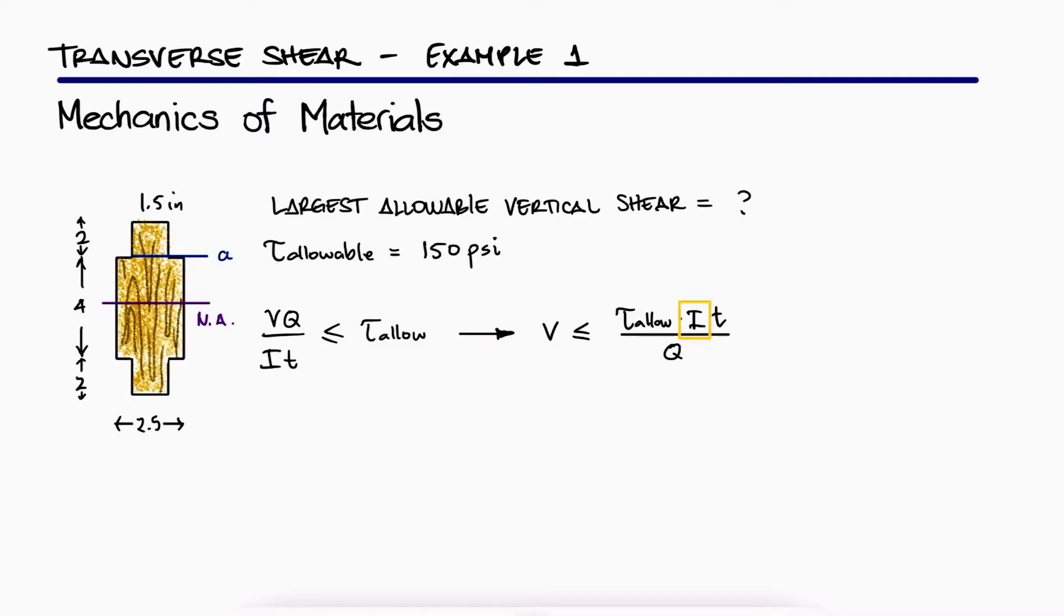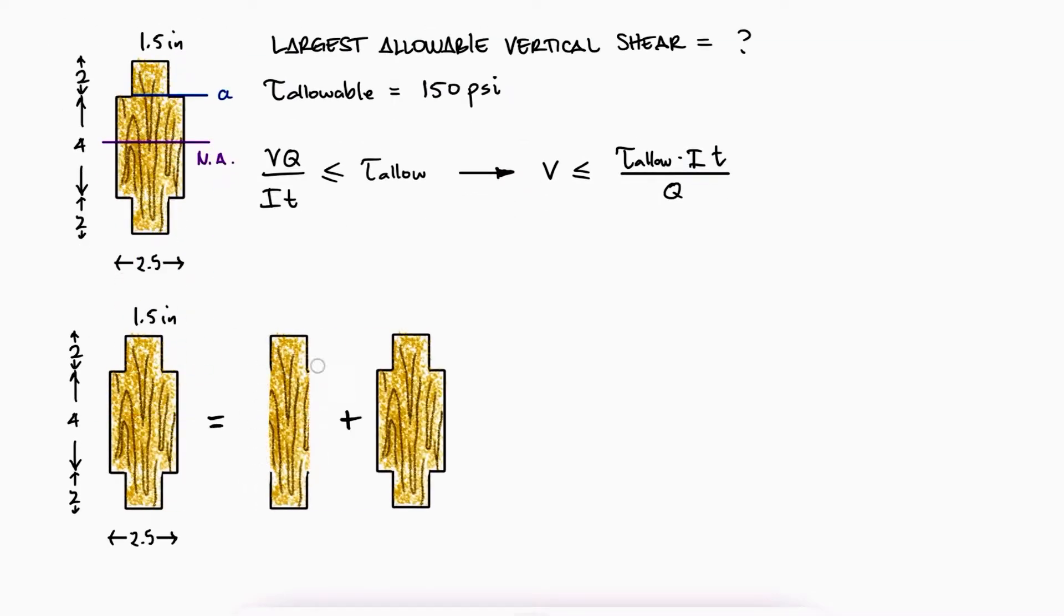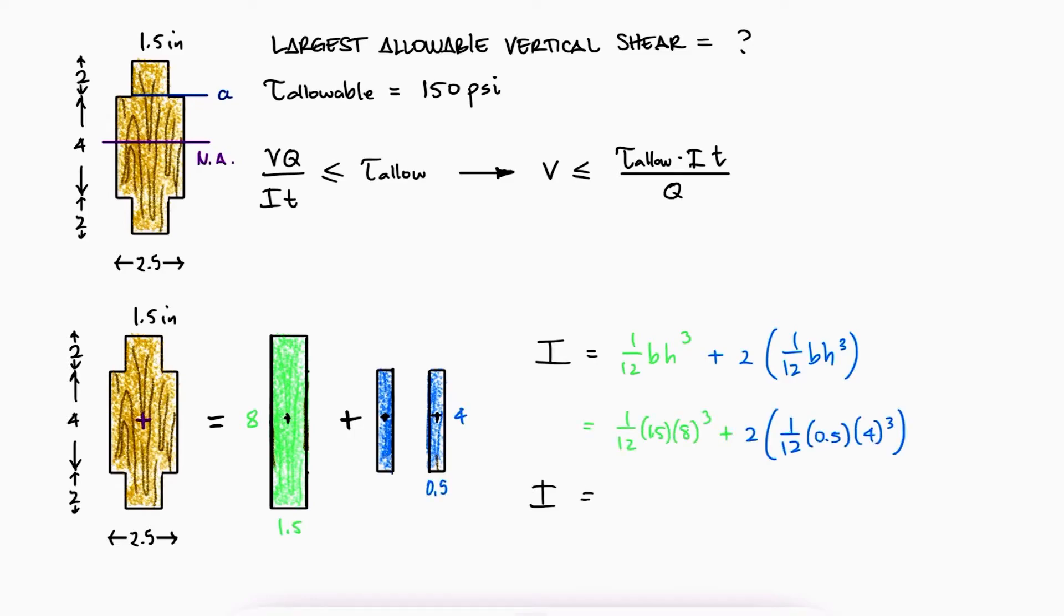Since the second moment of area is that for the entire cross-section area, we can calculate I for both locations. By dividing the cross-section into the shapes shown, notice that we don't need the parallel axis theorem, since the centroids of all rectangles pass through the neutral axis. Substituting the values, we find the second moment of area.